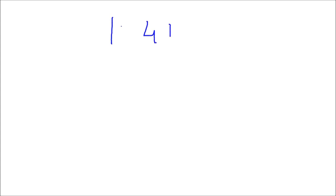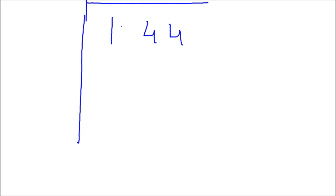Let's start with this trick. Suppose I have to find the square root of a decimal number — say 1.44. Step one is to start dividing the number into pairs.